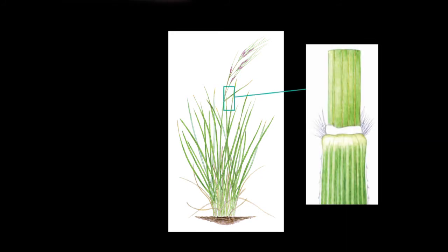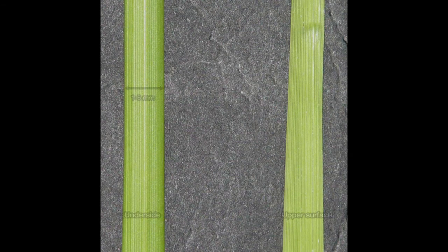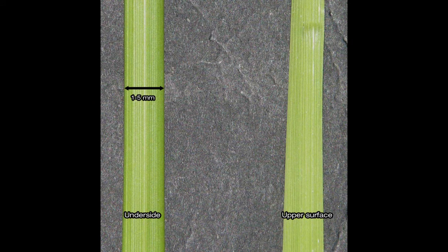Chilean needle grass leaves are between 1 and 5 millimeters wide, up to 300 millimeters long, and are flat in appearance, although they may roll inwards when under stress, for example during drought.